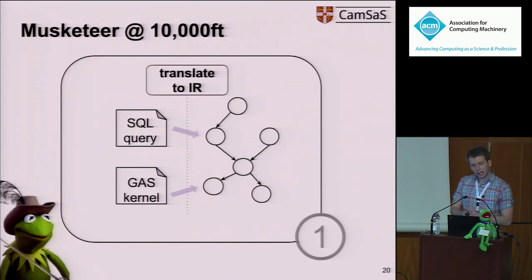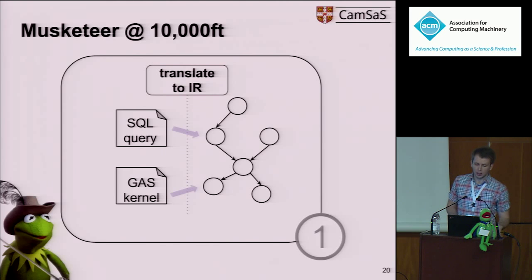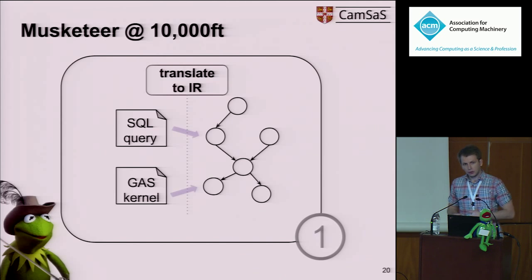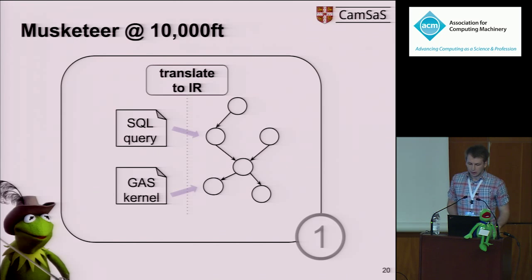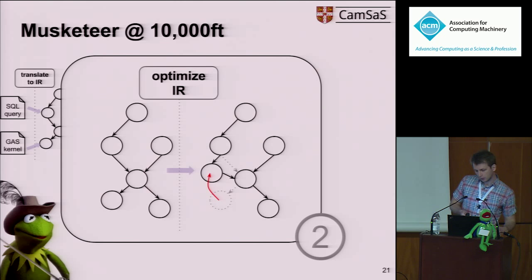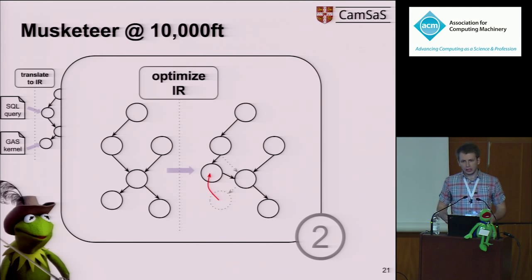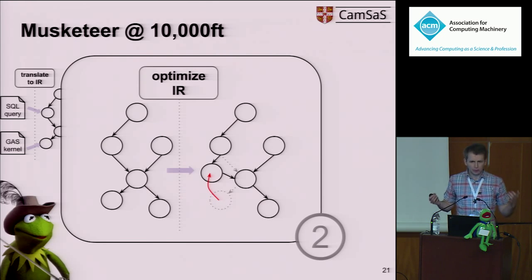Musketeer has a pipeline of six steps. In the first step, it takes the workflow from Kermit, which can be defined in one of the front-end languages — it can be a SQL query or a gather-apply-scatter kernel. The workflow is then translated into an intermediate representation based on relational algebra, with operators such as join and select. Then Musketeer applies rewrite rules, such as bringing selective operators up and pushing down generative ones. These are standard rewrite rules found in front-end languages like Hive or Spark SQL.